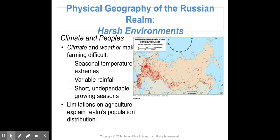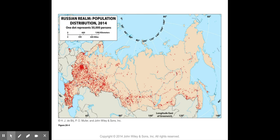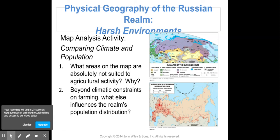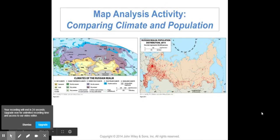As you can see, most of the Russian realm's population is concentrated to the west. Let's compare climate and population — look at the climate map to determine why most of Russia's population is in the west. Take a few minutes to examine that and come to a conclusion.